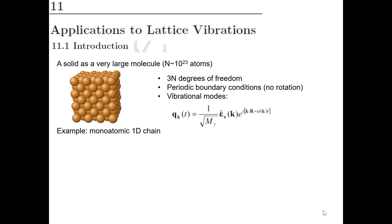If you think in this manner, you start to think that you may have something like 3N normal modes or 3N degrees of freedom. In the case of molecules, we had to subtract the 3 degrees of freedom of translation and 3 degrees of freedom of rotation. But for a very large number N, 3N minus 6 is essentially 3N, so it really doesn't matter to subtract translations and rotations.